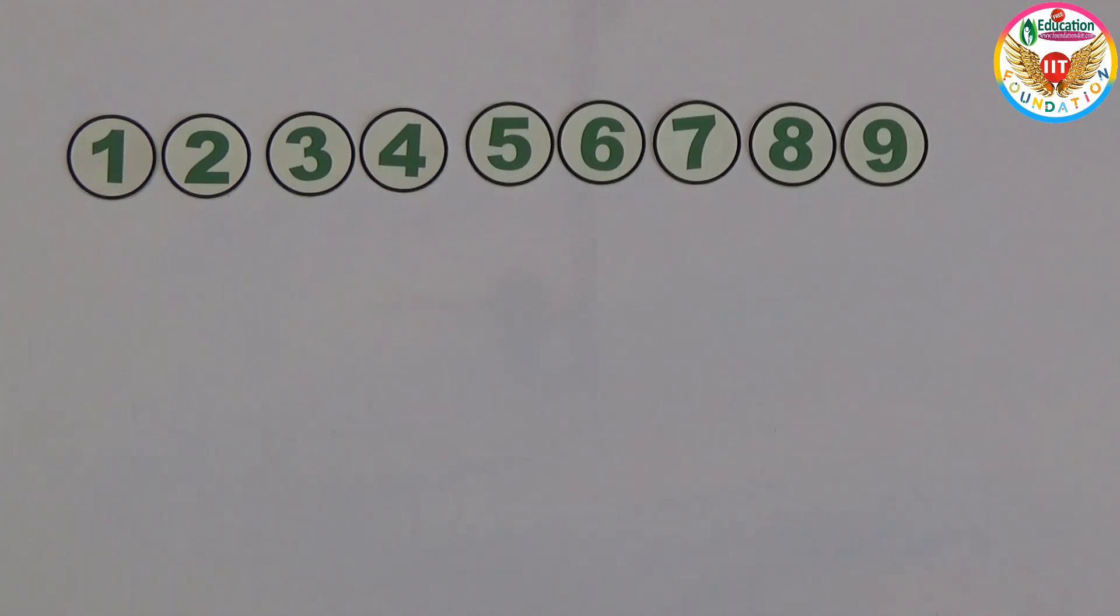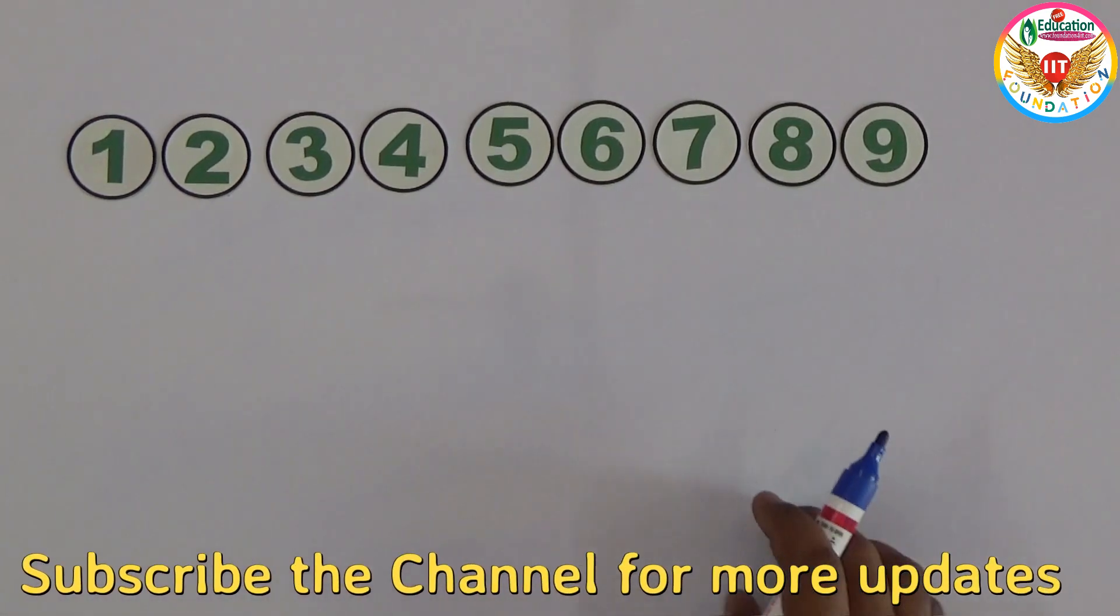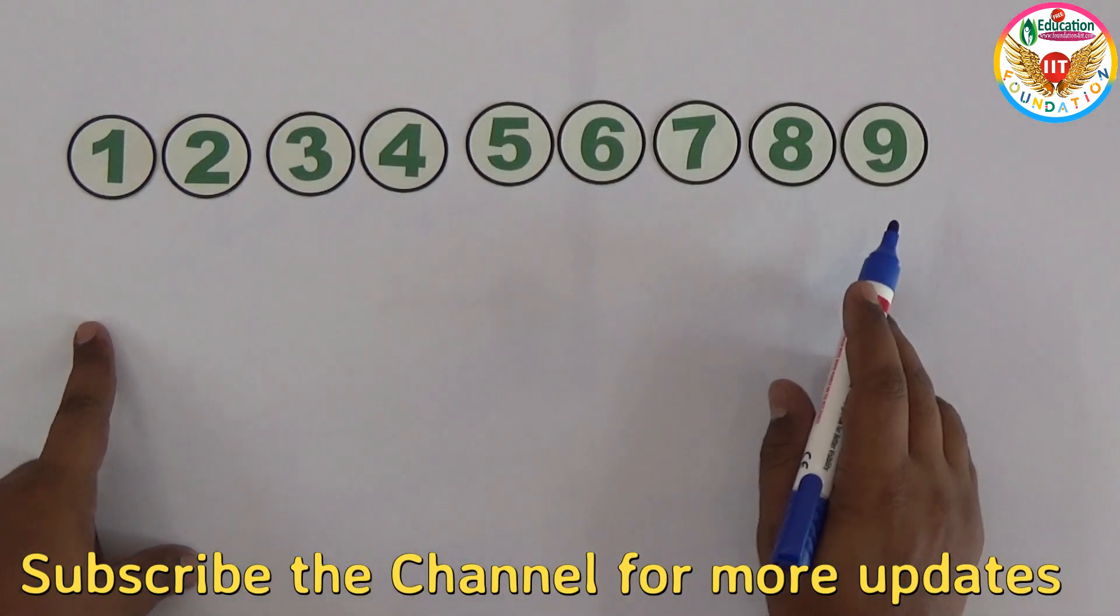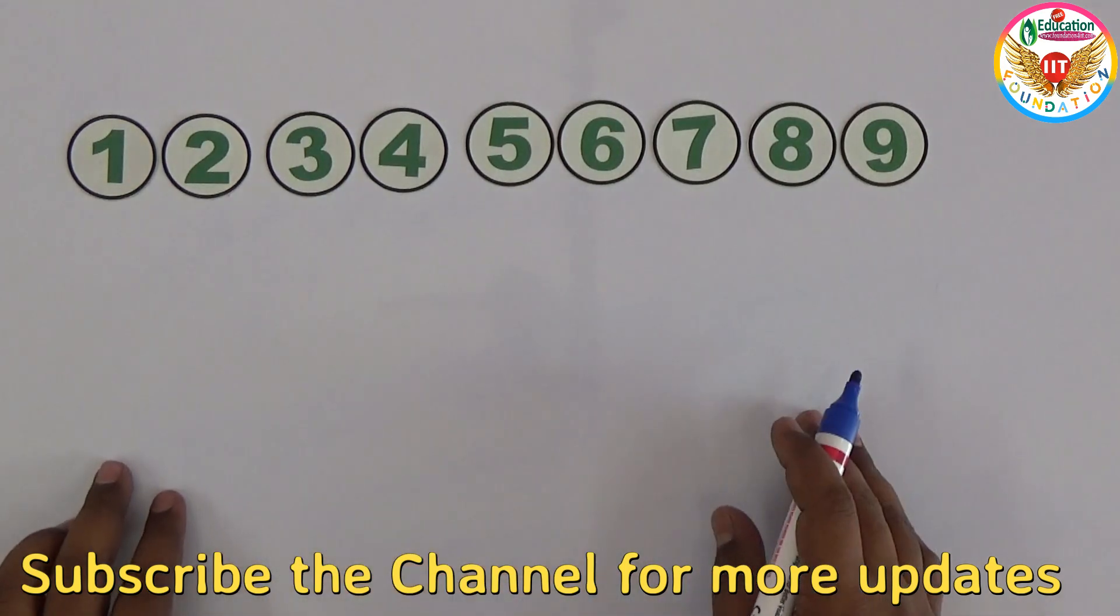Welcome to our education channel. In this video I will show an interesting puzzle which is related to squares and square roots. You can observe here 1 to 9, there are 9 digits. Using these 9 digits we should make one perfect square.